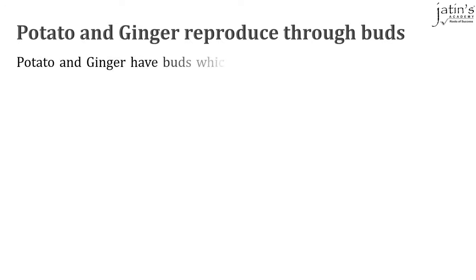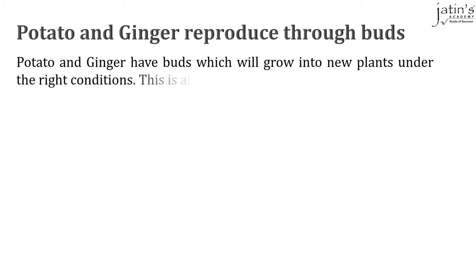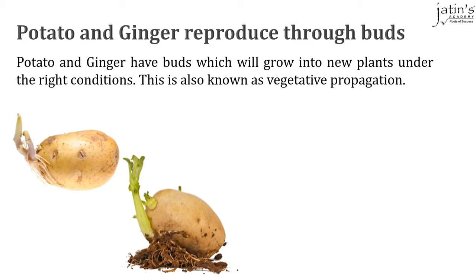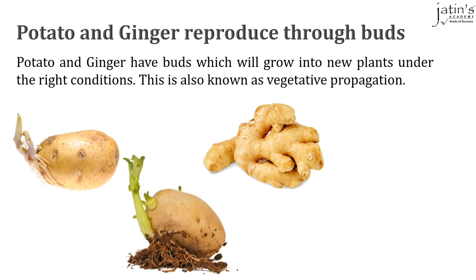Potato and ginger reproduce through buds. Potato and ginger have buds which will grow into new plants under the right conditions. This type of reproduction is also known as vegetative propagation, as these plants reproduce from their vegetative parts. Here we can see potato and ginger reproducing from buds.